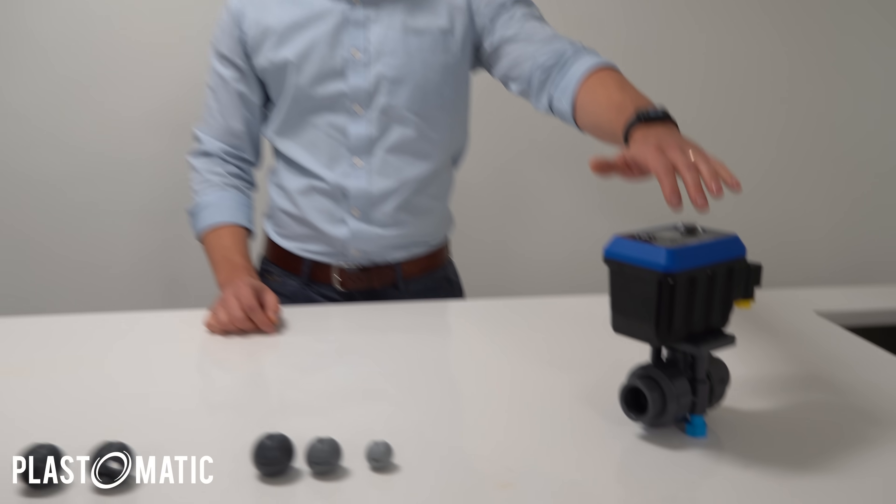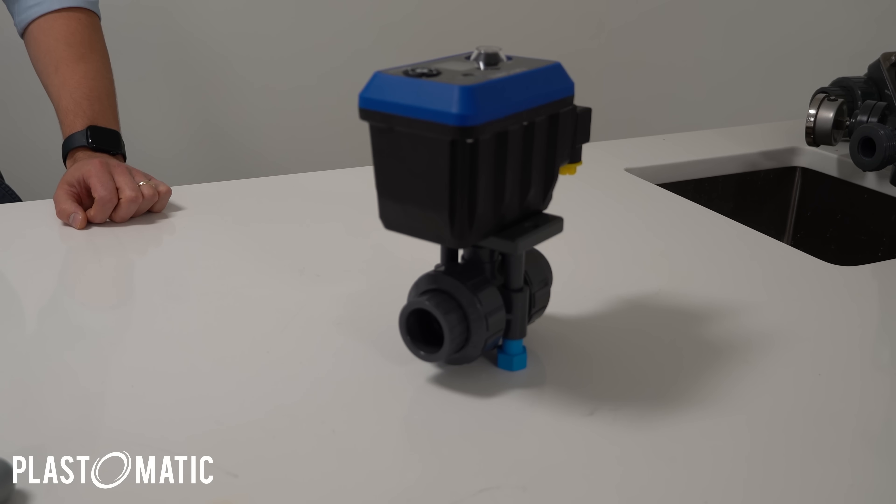We could then pair a characterized ball in our ball valve with an electric actuator for unparalleled flow control in your system.